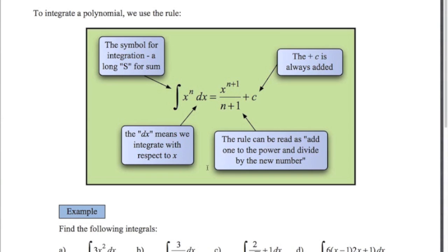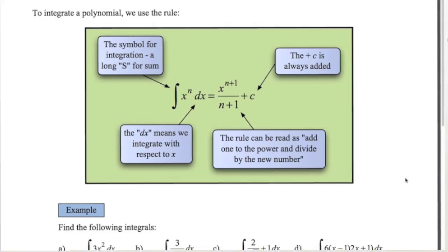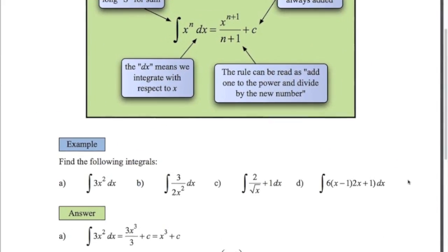So that is the formula that you need to know. It's on the formula sheet. But that's the formula you need to know to do these examples here at the bottom. So the integral of 3x squared with respect to x, add one to the power, the three just stays there at the front, divide by that new number. The three's cancel. We've got x cubed plus c.